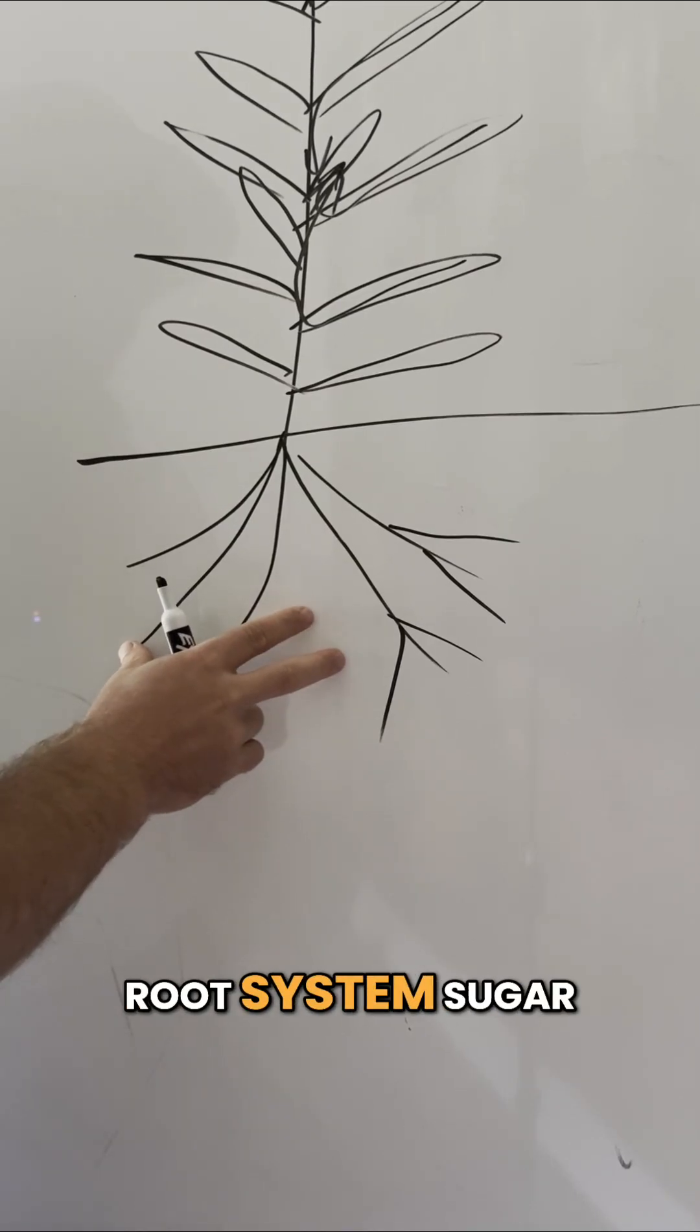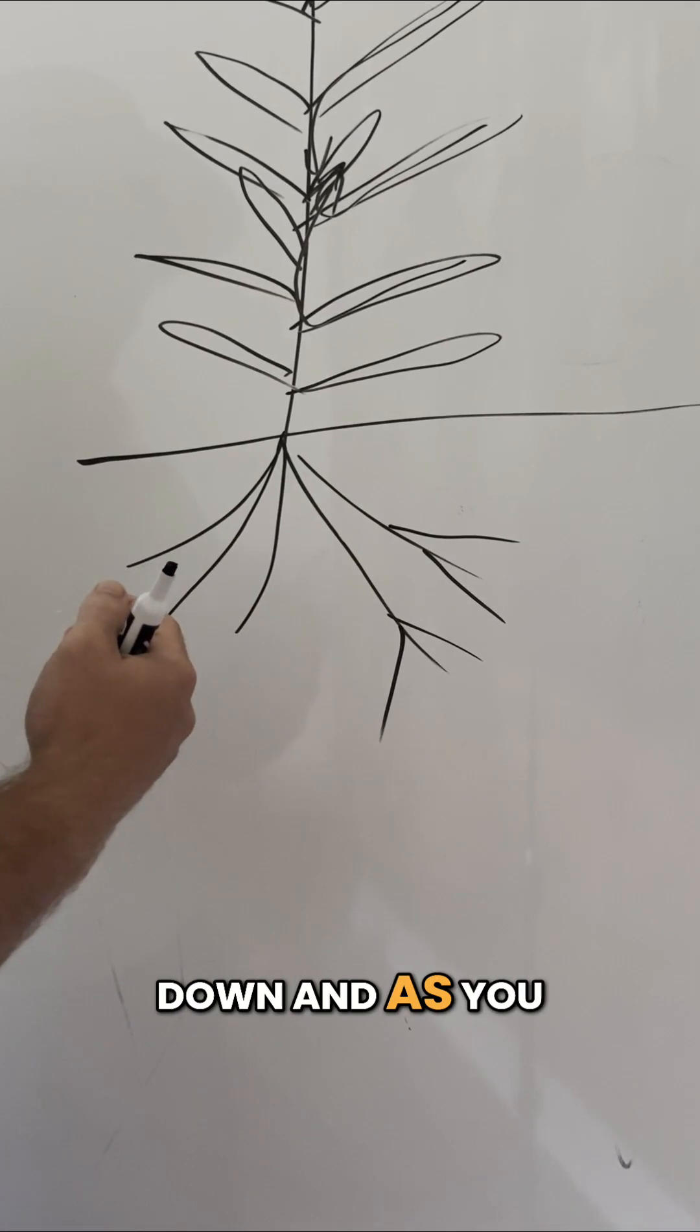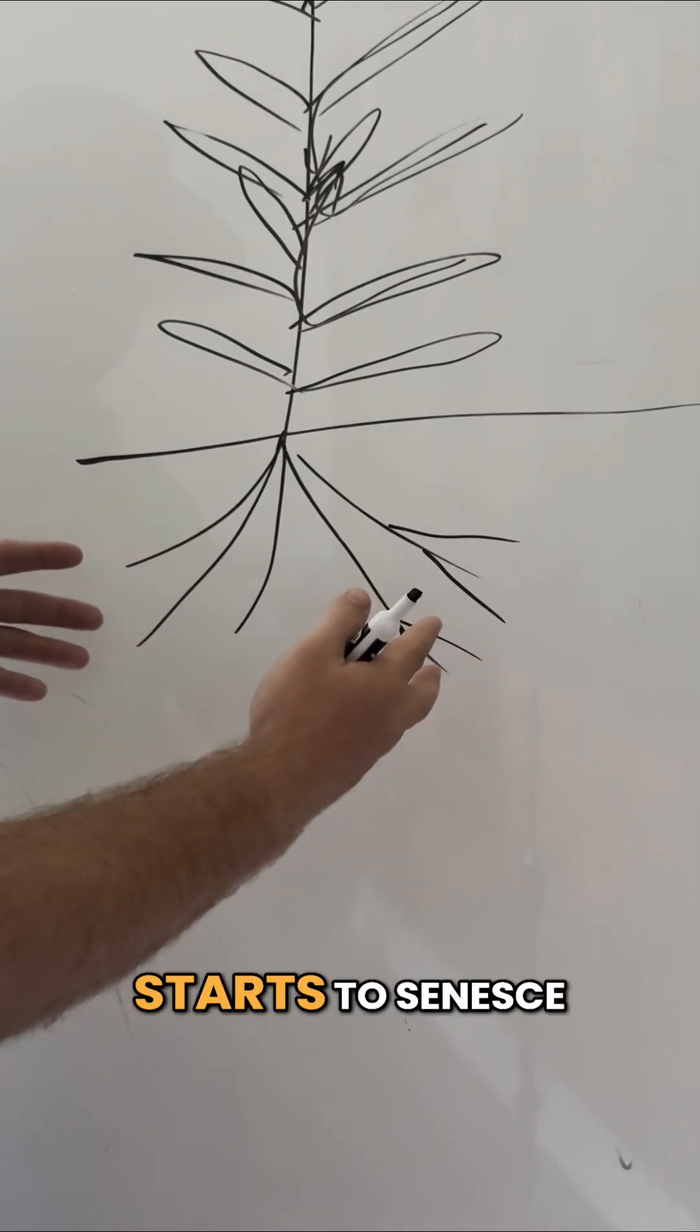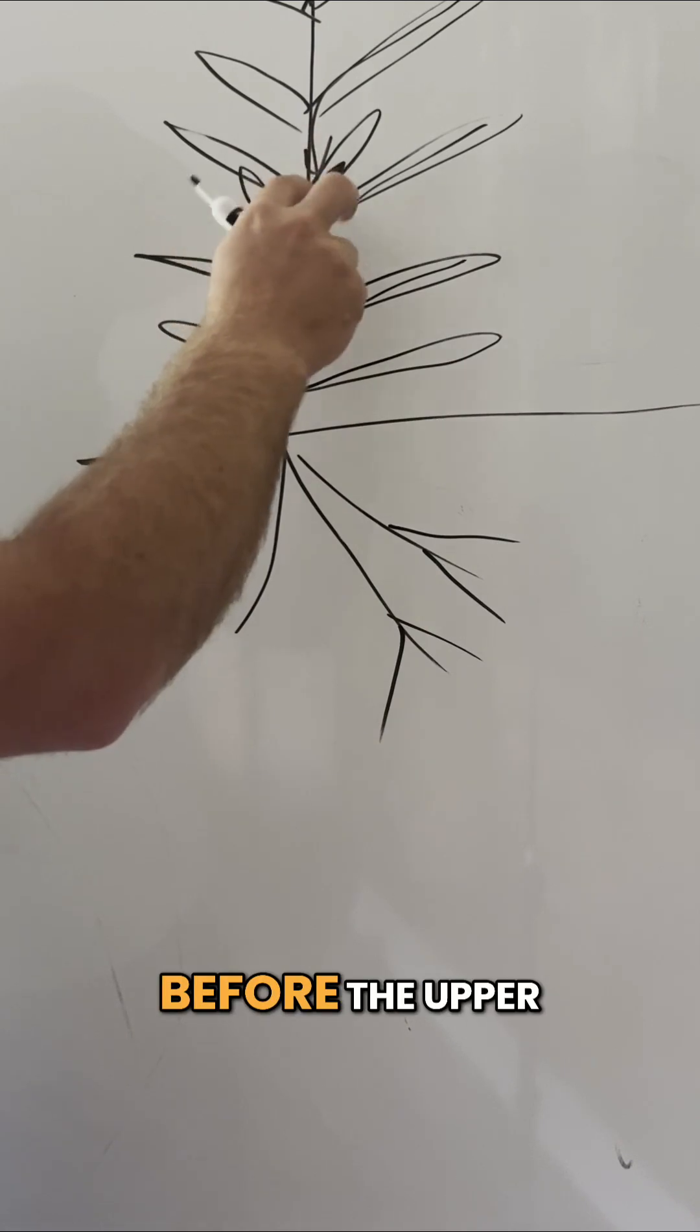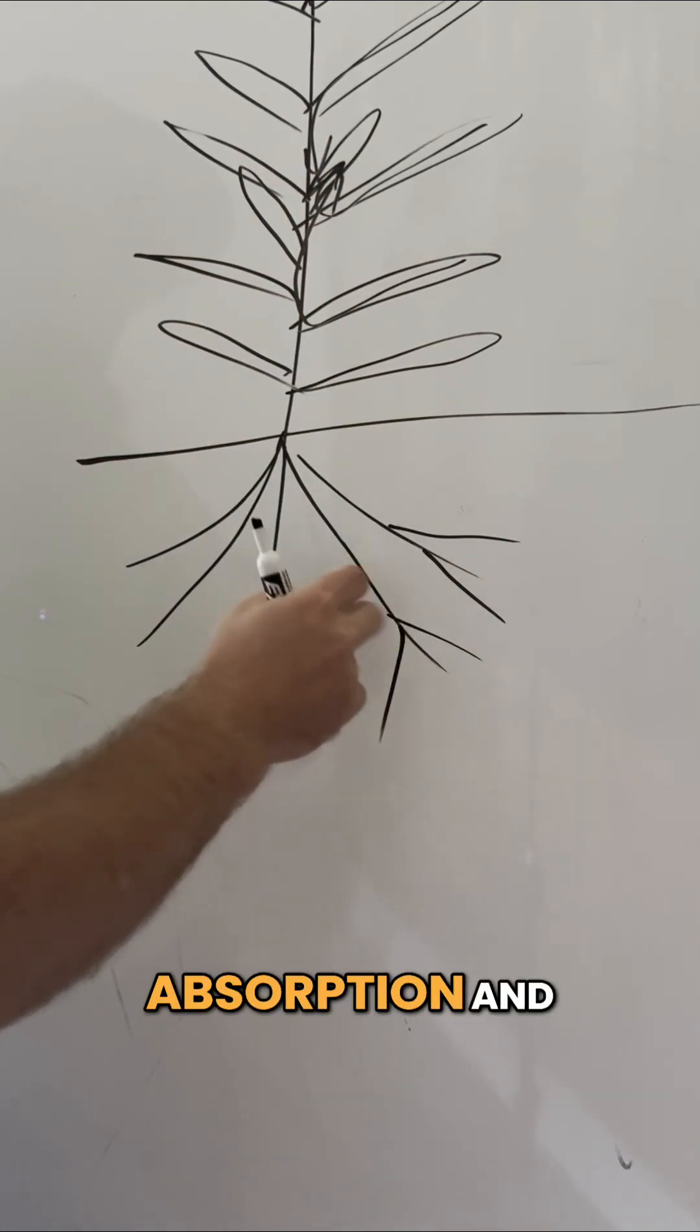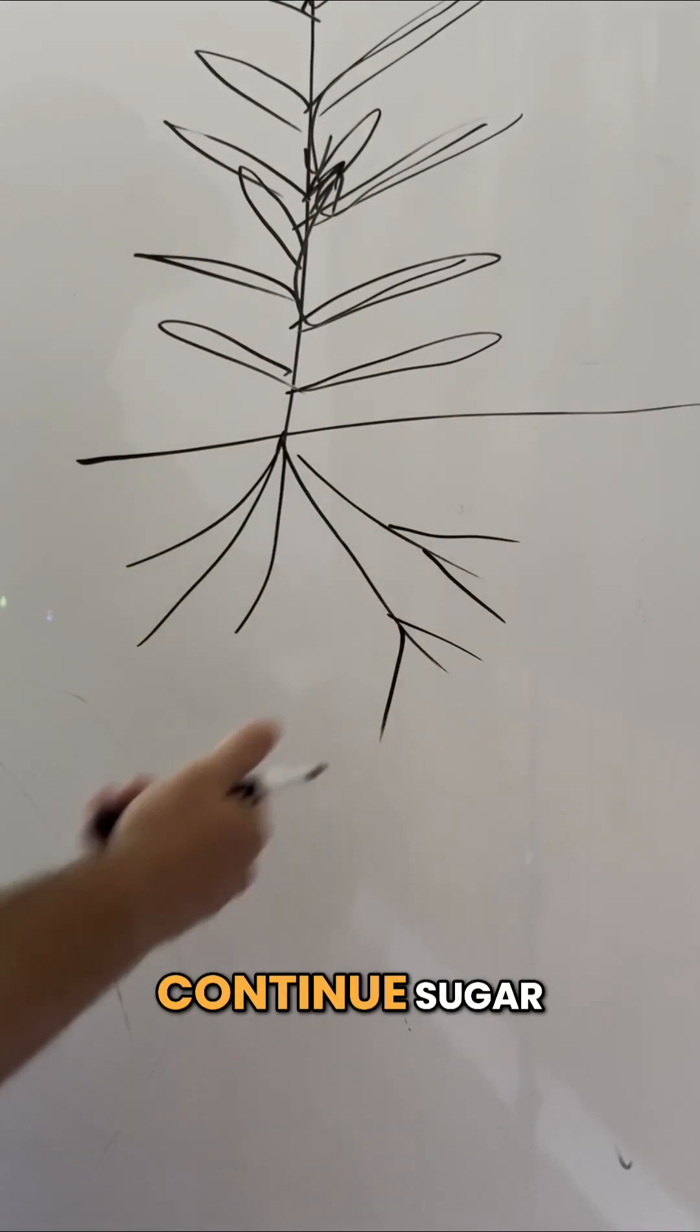This is costing the root system sugar. So the root system slows down and as you no longer have growing root tips, the root system essentially starts to senesce before the upper parts of the plant, before the ear does. And so you get less nutrient absorption and less water absorption to move up to the plant to facilitate photosynthesis and continue sugar production.